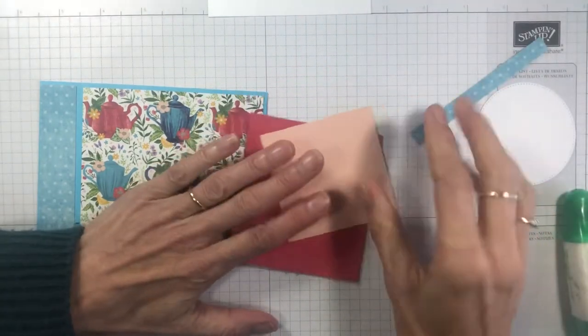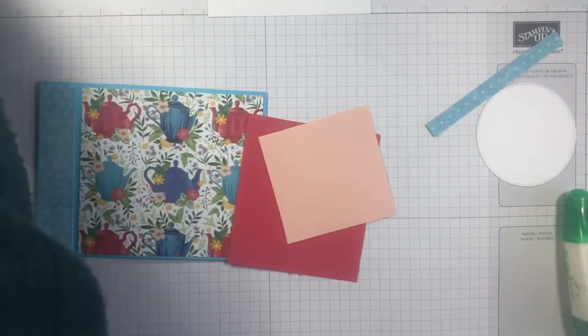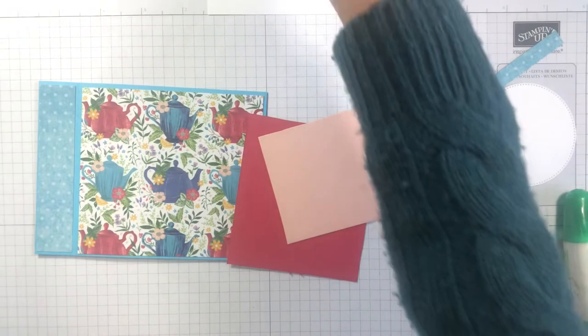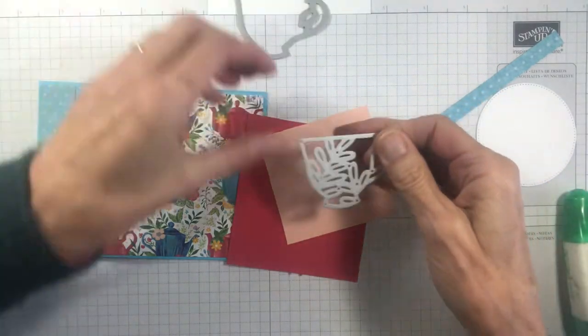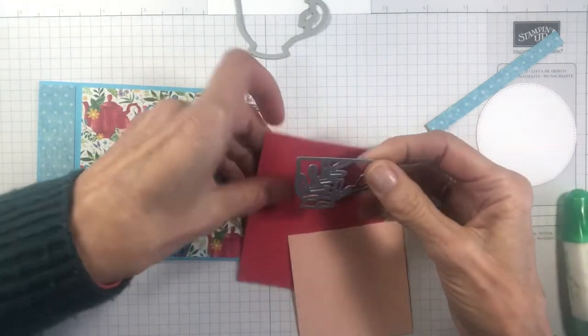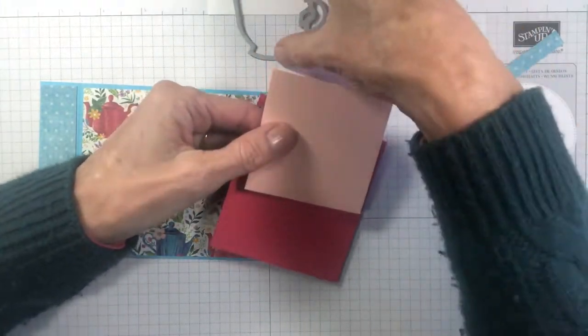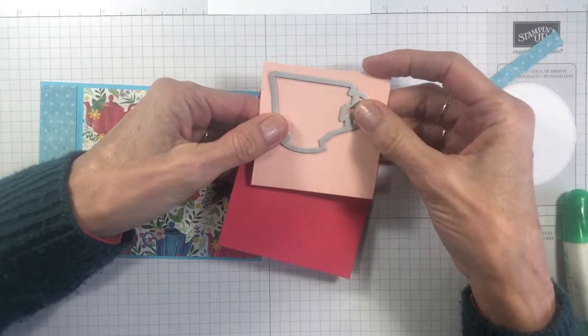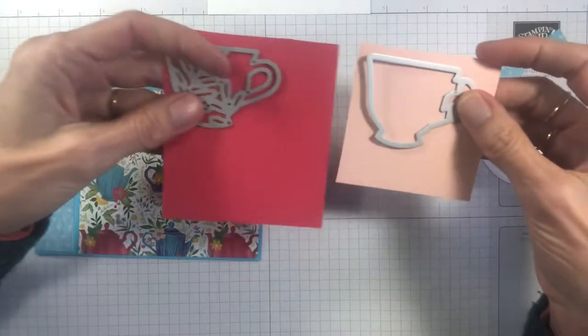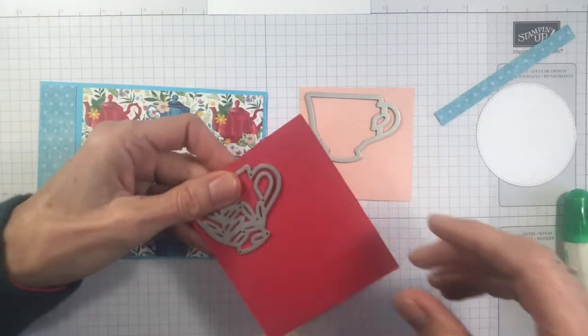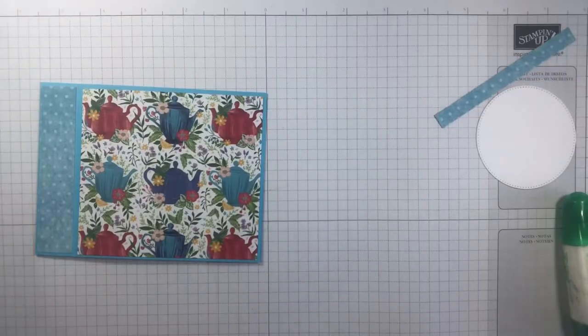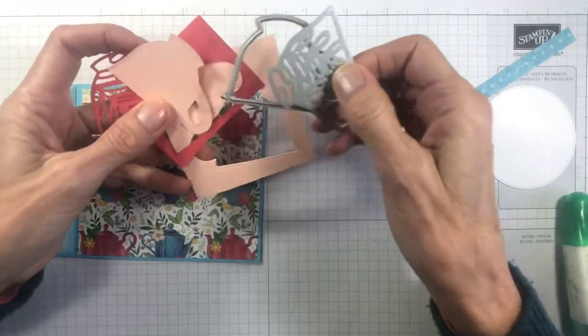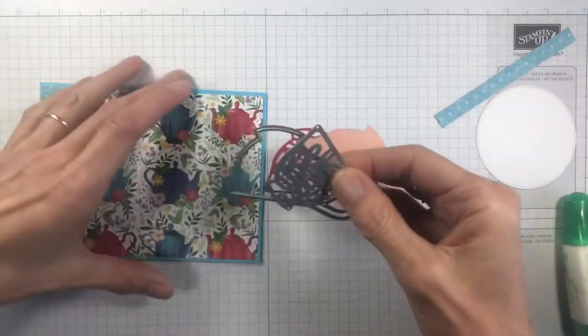Now with our scrap pieces we're going to die cut our teacups. I like to layer these because they're so nice to layer together. So we have a detailed one from the Sweet Sorbet and this outline from Petal Pink that I'm using. I'll just run through that die cut machine.